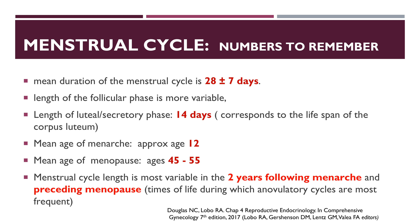The mean duration of the menstrual cycle is about 28 plus or minus 7 days. The length of the first half of the menstrual cycle is variable, whereas the second half, the luteal or secretory phase, is about 14 days, because that corresponds to the lifespan of the corpus luteum. The mean age of menarche is around 12 years old, whereas the mean age of menopause is around 45 to 55 years old. The menstrual cycle length is most variable in the two years following menarche and preceding menopause, because these are the times when anovulatory cycles are most frequent.